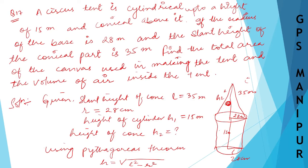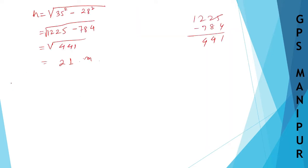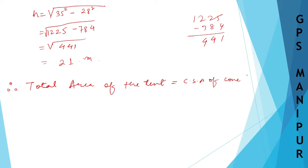Now, since the radius of the base is 28 meters and the slant height of the conical part is 35 meters, I need to find the total area of the canvas. Total area of the tent equals curved surface area of the conical part plus curved surface area of the cylindrical part.